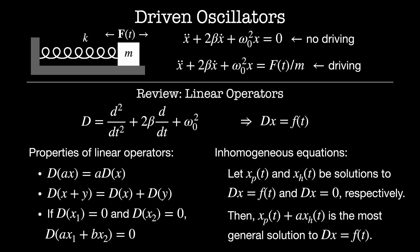It's important to note that I can't put a constant in front of my particular solution. If I were to do that, I would have a times xp of t, which means D acting on my solution gives me a times D acting on my particular solution — a multiple of the solution I'm interested in. That's why we can't have a constant times the particular solution.